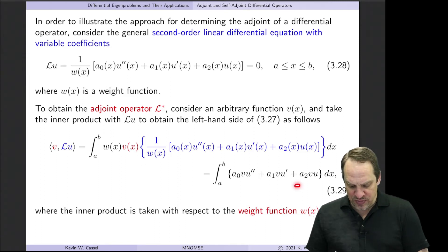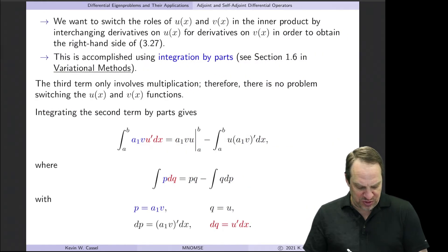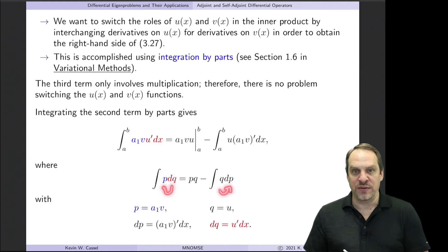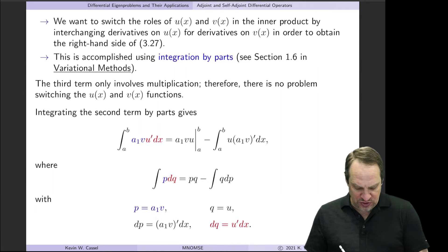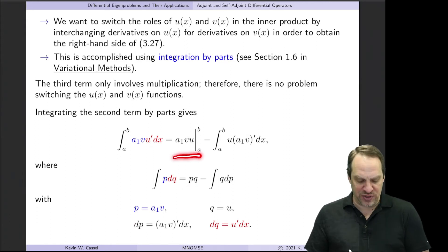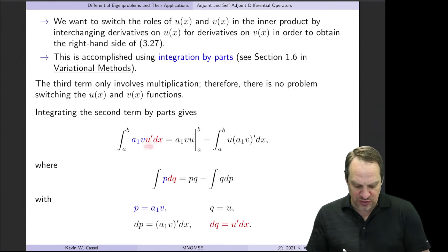The last term, a2·v·u, has no derivatives, so it requires no integration by parts. For the second term, a1·v·u', we apply the integration by parts formula: ∫P dQ = P·Q − ∫Q dP. Here dQ = u'·dx, so Q = u, and P = a1·v. This gives a boundary term [a1·v·u] evaluated at the endpoints, minus an integral where the derivative has been moved off u and onto v.